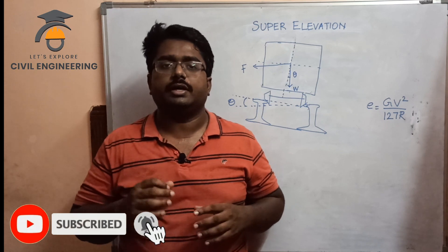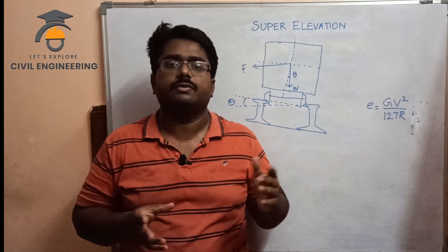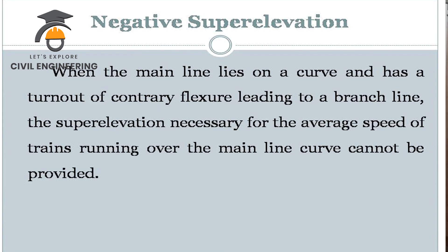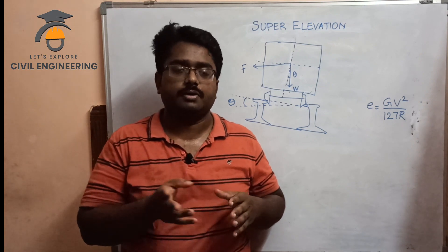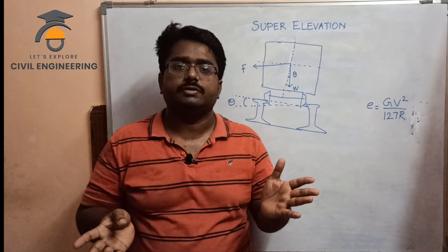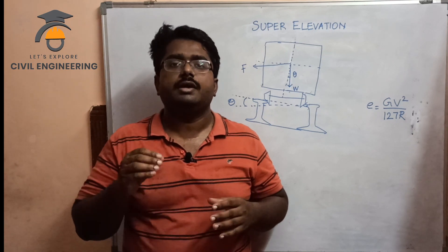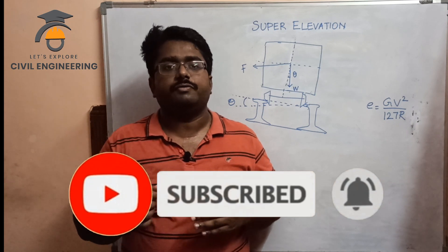Another concept is negative super elevation. This occurs on a curved track with an opposite curve direction — the required super elevation is in the opposite direction. If we turn to the left side, the super elevation is provided to the opposite side, which is negative super elevation. If you are watching railway engineering videos, please subscribe and share with your friends.